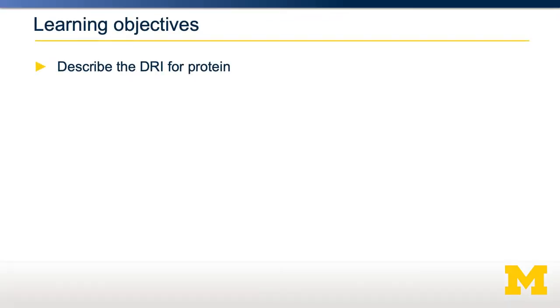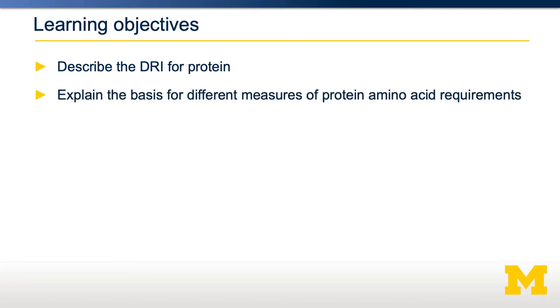Protein is unique among the three macronutrients because we have quite good objective measures to determine somebody's individual protein intake. In this video, we're going to describe what the dietary recommended intake for protein is and how it was established, and talk about the fundamental basis for various different measurements of protein and amino acid requirements.